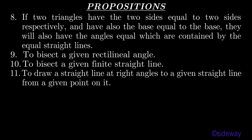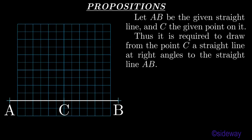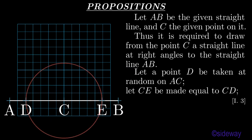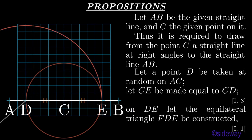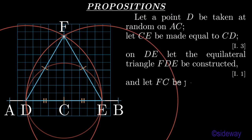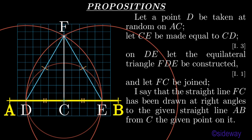Proposition 11. To draw a straight line at right angles to a given straight line from a given point on it. Let AB be the given straight line and C the given point on it. Thus it is required to draw from the point C a straight line at right angles to the straight line AB. Let a point D be taken at random on AC. Let CE be made equal to CD, by Book 1 Proposition 3. On DE let the equilateral triangle FDE be constructed, by Book 1 Proposition 1. And let FC be joined.